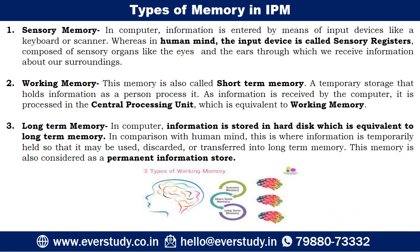Just like in a computer, information is entered by means of input devices — keyboard, scanner, and so on. Similarly, in the human mind, the input devices are called sensory registers, which are composed of sensory organs. The eyes give us iconic memory, and the ears give us echoic memory. What we see, we can remember for about 0.5 seconds, and what we listen to we can remember for 3 to 4 seconds. After that the information is passed on as input.